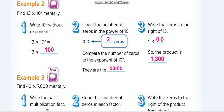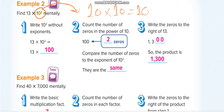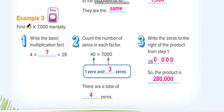Here again, ten to the power two means ten times ten equals one hundred. So we are multiplying thirteen with one hundred. We remove the two zeros, thirteen times one equals thirteen, and put the two zeros back — thirteen hundred.